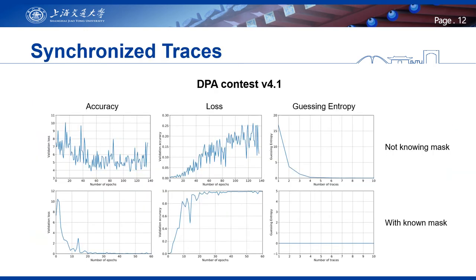First, we apply our network to synchronized traces. For DPA Contest v4.1, the first, second, and third columns show validation accuracy, validation loss, and guessing entropy respectively. Without using knowledge of the mask, we reach guessing entropy zero in four or five traces. When we suppose the mask value is known, we need only one trace to recover the key.